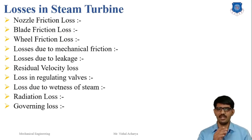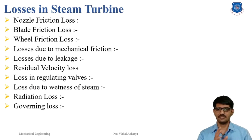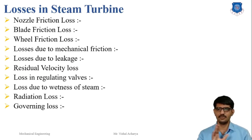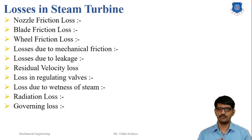Third is the wheel friction loss. When steam passes through the rotating turbine wheel it produces some resistance on the turbine wheel, causing it to rotate at a lower speed. This loss occurs in both impulse and reaction turbines and the total wheel friction loss is about 10 percent of the turbine loss. Fourth is the loss due to mechanical friction, which occurs in the turbine bearings due to friction between the shaft and the wheel bearings, and also in the regulating valve. Proper lubrication of the turbine parts can reduce this loss.